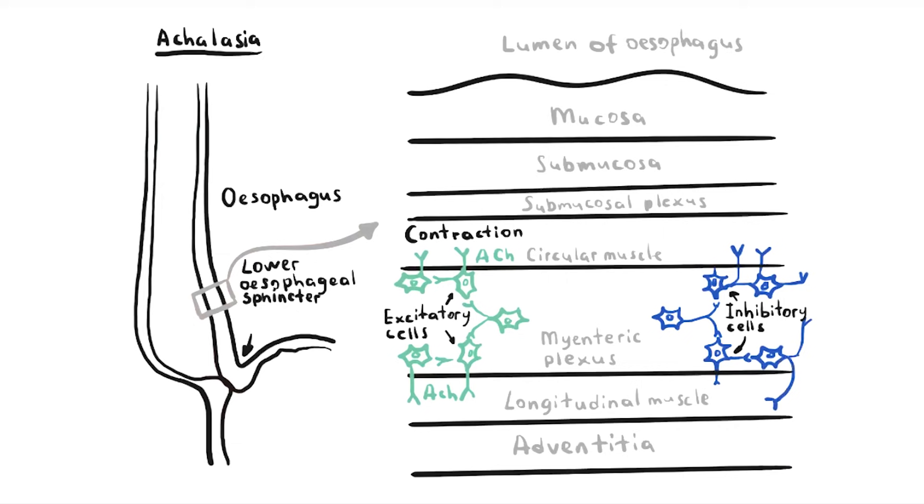Usually, the inhibitory cells release vasoactive intestinal peptides, VIP, and nitric oxide, which have the effect of smooth muscle relaxation.